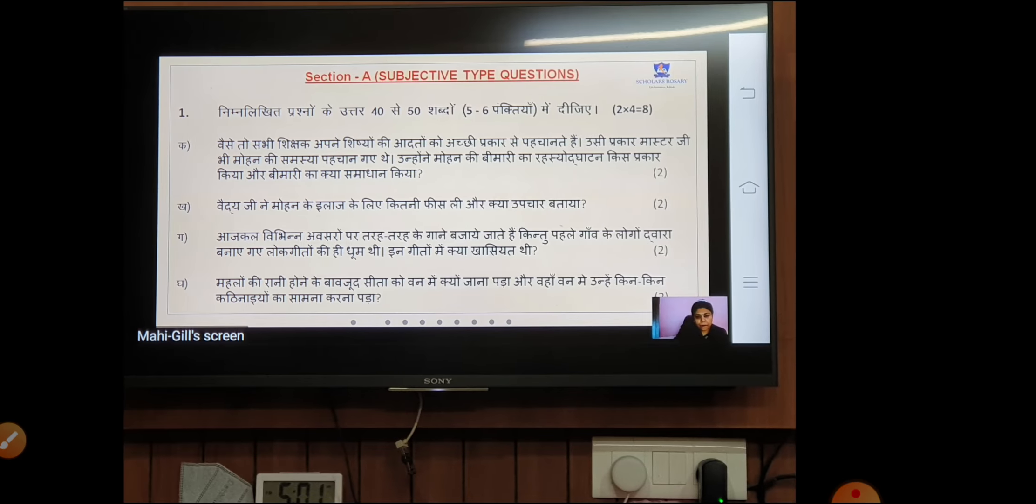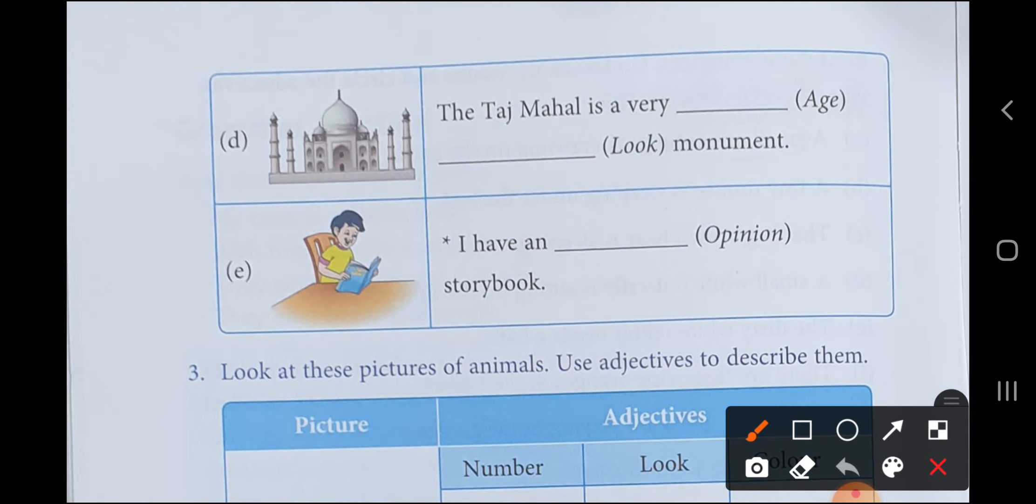Next one is, do you know what is this? Yes, this is Taj Mahal. And where is the Taj Mahal? In Agra. Okay, the Taj Mahal is a very dash, age is written. See, age means very old. You don't know its exact age, you can't write 10 years, 12 years, 13 years, I don't know. So we will say old, very old. You could also write new, but the Taj Mahal is a very old dash monument. Just by looking at it, you know what it's made of - marble. So we will write marble.